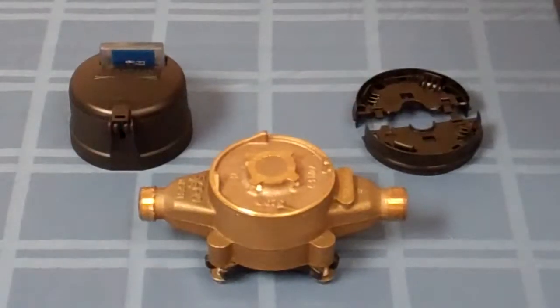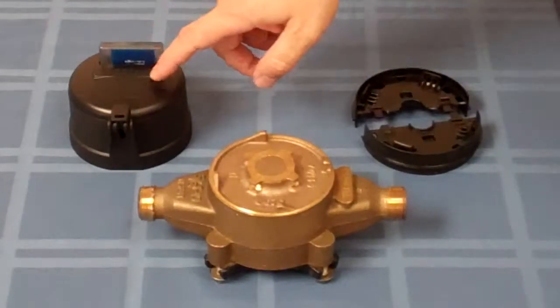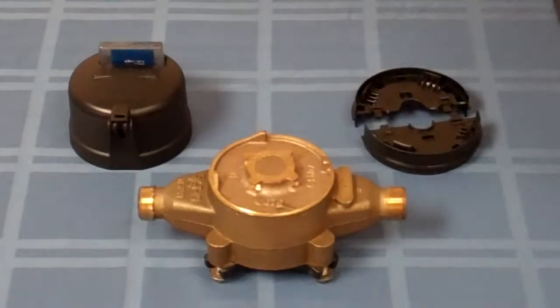Once you install the register on the older meter, you've automatically improved your data resolution. This register literally counts the amount of water that goes through the meter with every revolution of the magnet. So that's important for data logging purposes.